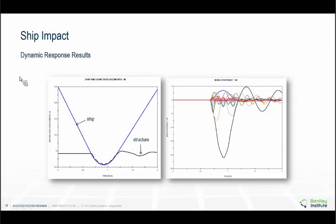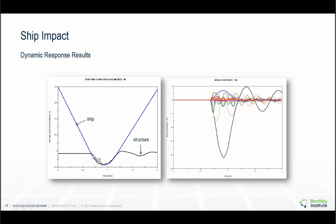For a dynamic ship impact, we passed the model through our dynamic response module and then took the inertia loads into Collapse to ensure survivability. The graph shows the blue line as the ship heading toward the structure (the black line). At a certain stage, the ship impacts the structure, which starts to vibrate; then the vessel is pushed off and the structure continues to respond. The graph on the right shows the modal responses, the various mode shapes, and the participation factors.